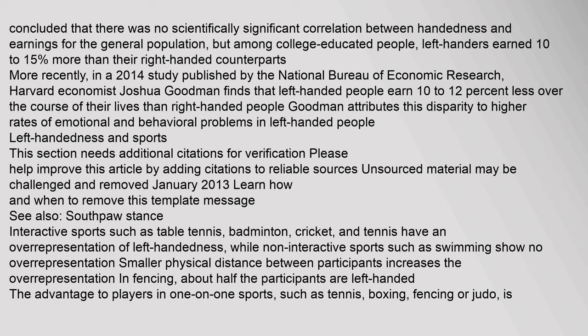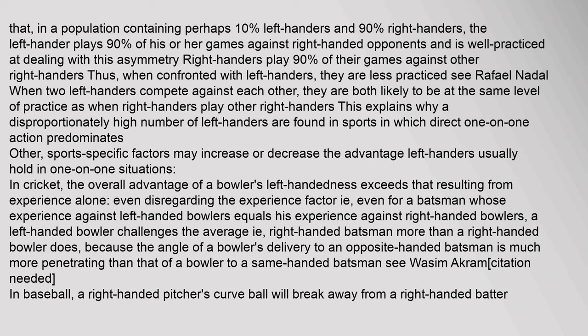Right-handers play 90% of their games against other right-handers; thus, when confronted with left-handers, they are less practiced. When two left-handers compete against each other, they are both likely to be at the same level of practice as when right-handers play other right-handers. This explains why a disproportionately high number of left-handers are found in sports in which direct one-on-one action predominates. Other sport-specific factors may increase or decrease the advantage left-handers usually hold in one-on-one situations.